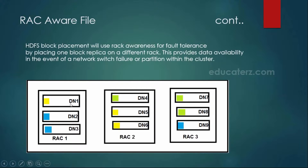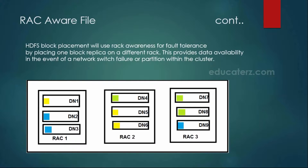The yellow color block is in DN1, and the two replicas got stored in DN5. As per the data placement policy, the first block is chosen in rack 1, and the other two replicas are always stored in rack 2 or a different rack than the first, because in real time even racks can go down. Whenever a rack goes down, you will not lose any of the blocks. This is why the data placement policy ensures one block is in one rack and the rest two replicas are in a different rack.